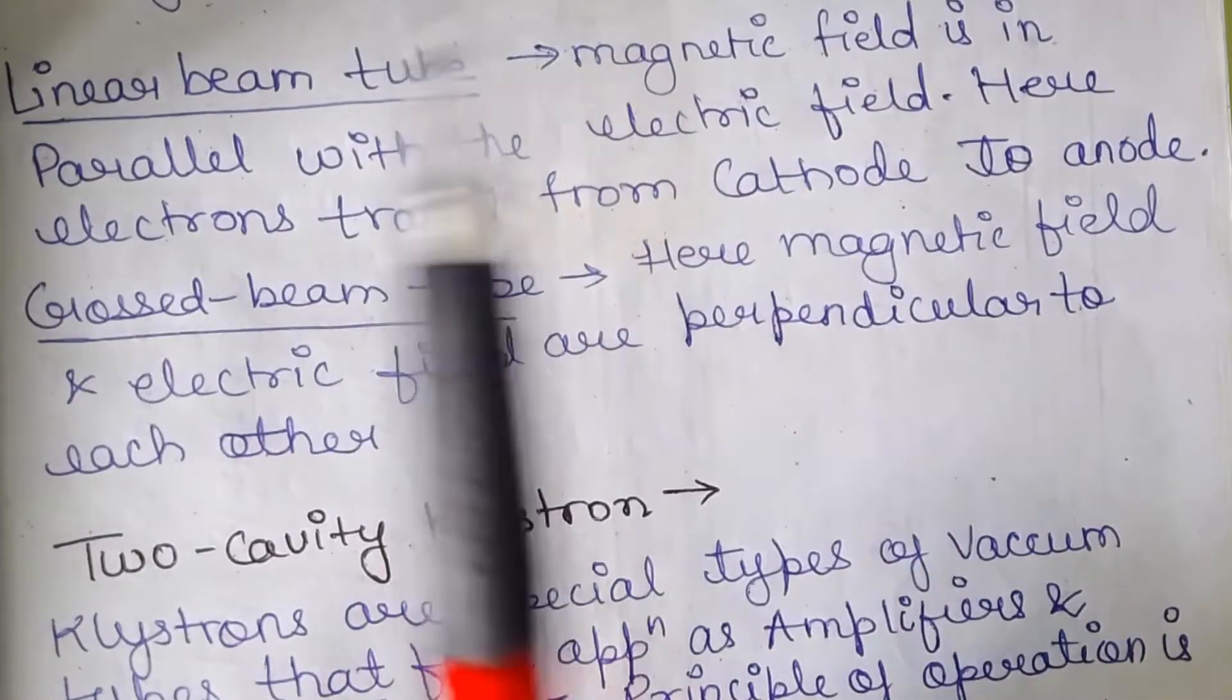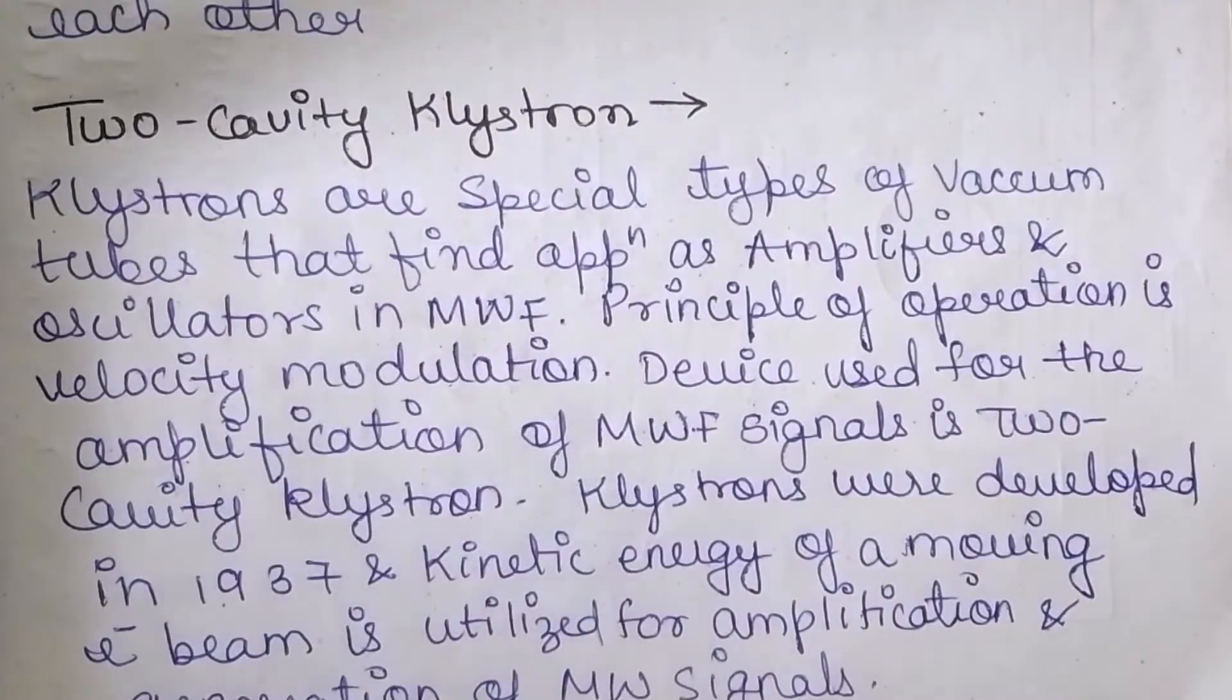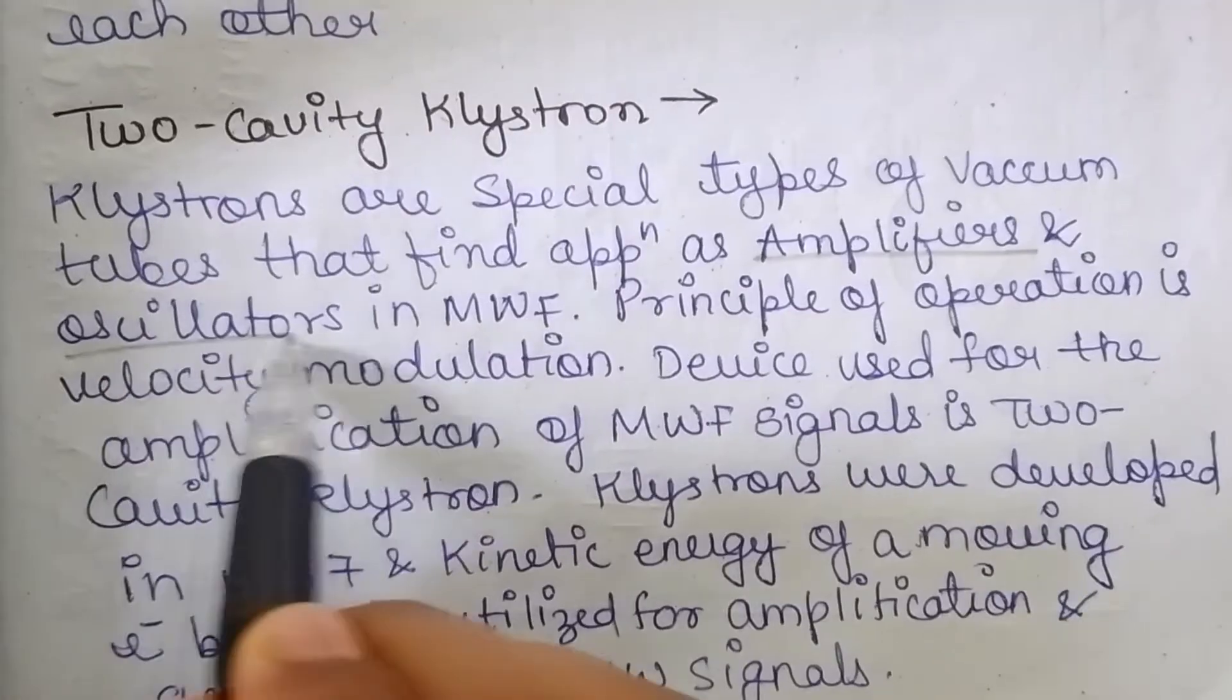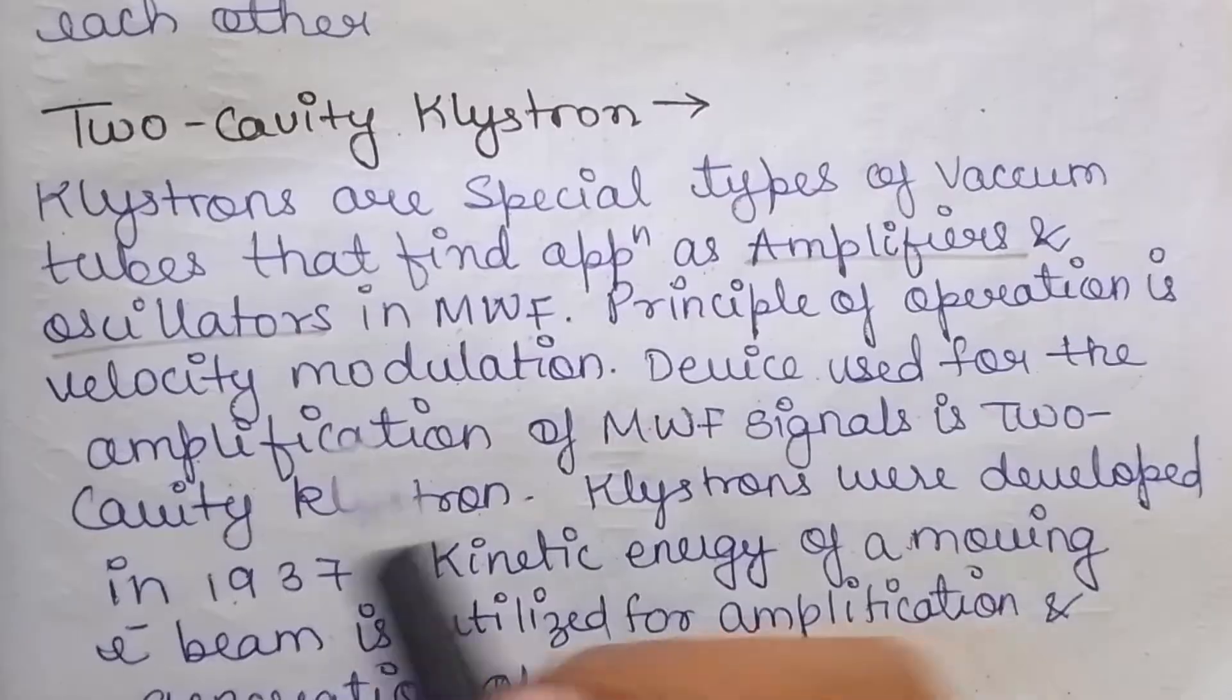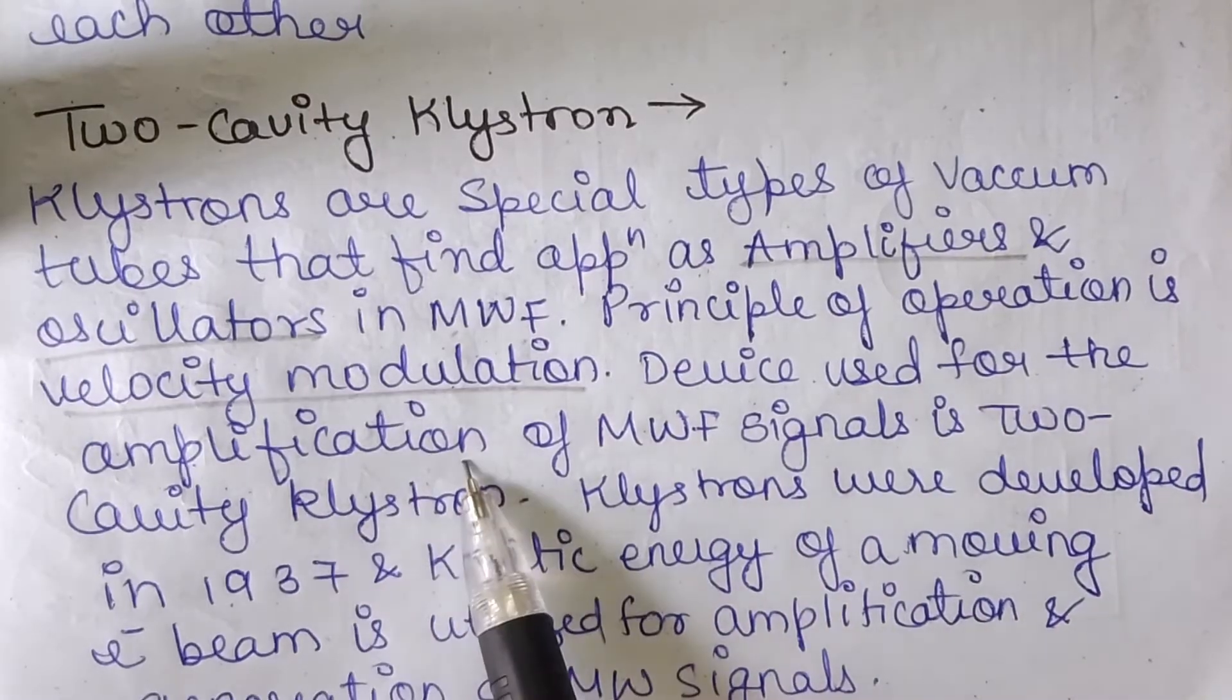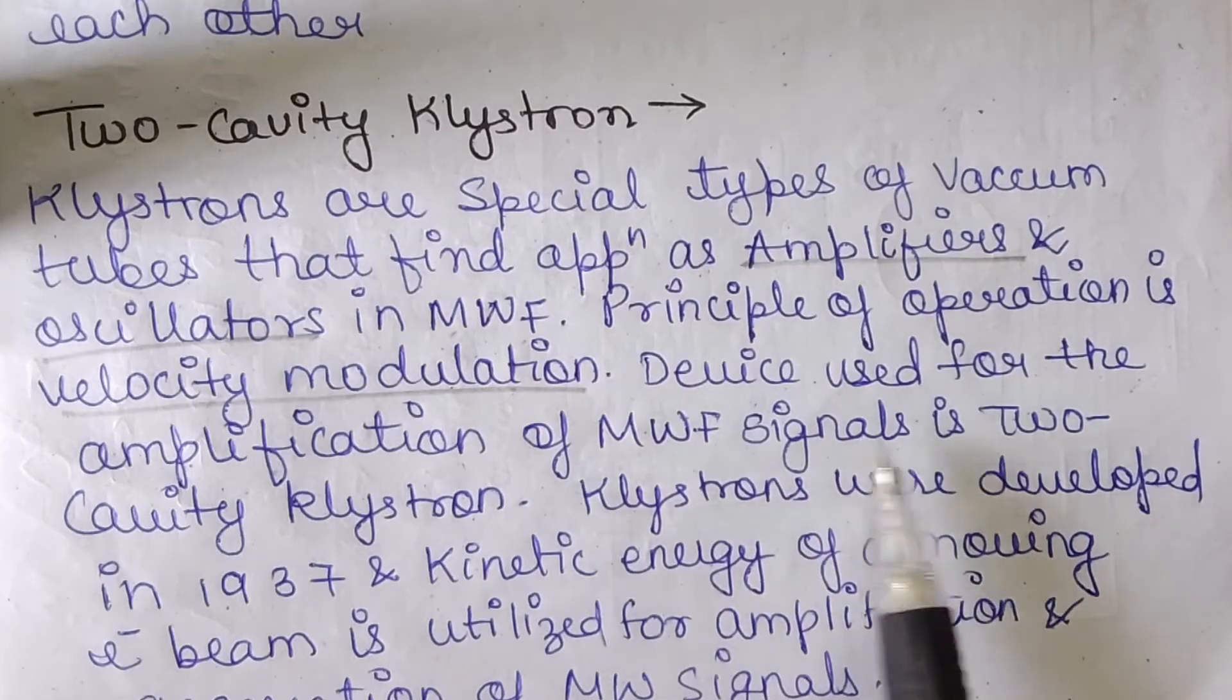In the linear beam tubes, there are cavity based tubes. So firstly, let's know about the klystrons. Klystrons are the special type of vacuum tubes that find applications as the amplifiers and the oscillators in the microwave frequencies. The principal operation is velocity modulation. This device can be used for the amplification of the microwave signals as well as for the oscillation of microwave signals.